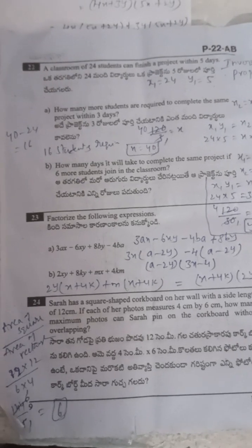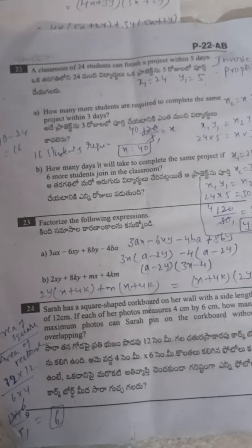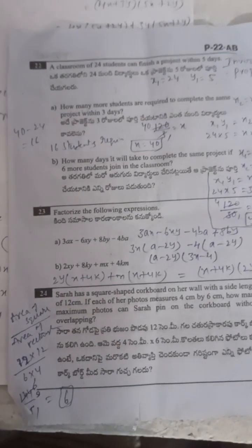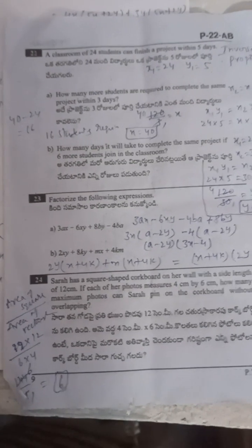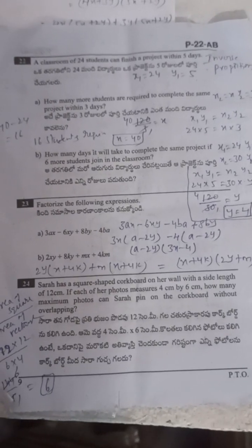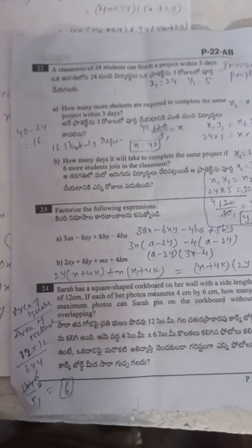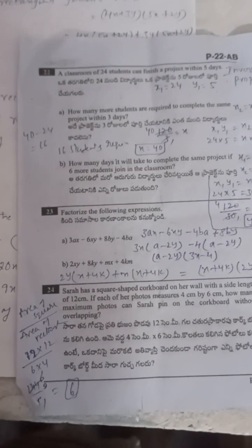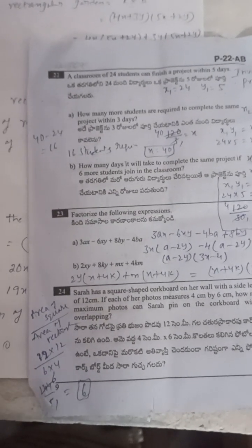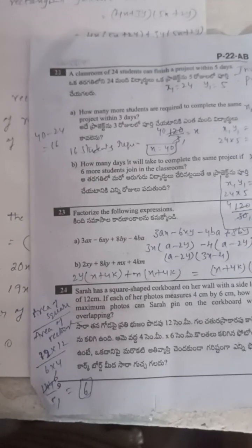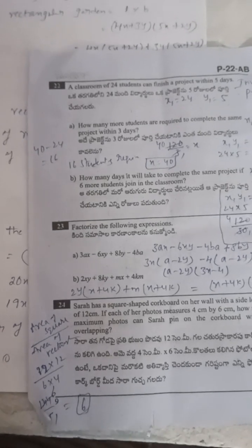Next: a classroom of 24 students can finish a project within 5 days. How many more students are required to complete the same project within 3 days? This is an inverse proportion. X1 equals 24, Y1 equals 5, X2 equals unknown, Y2 equals 3. Using inverse proportion: X1 times Y1 equals X2 times Y2, so 24 into 5 equals X2 into 3, giving X2 equals 120 by 3 equals 40. More students needed: 40 minus 24 equals 16 students.